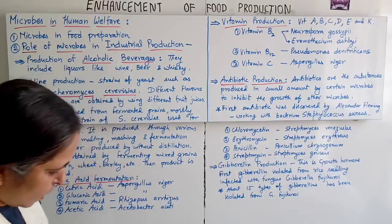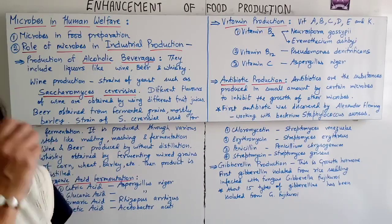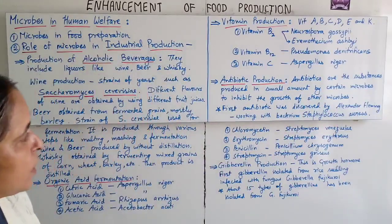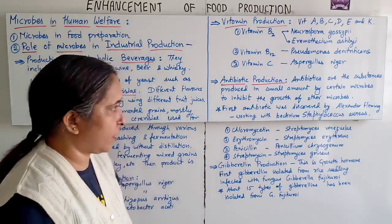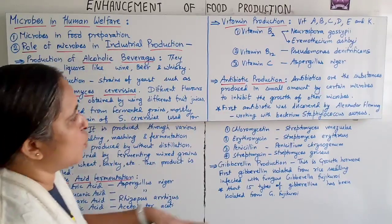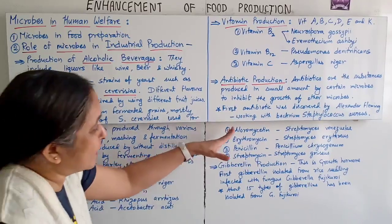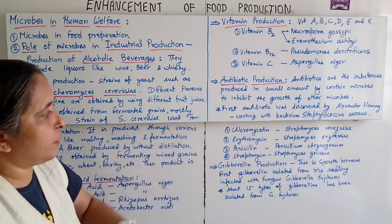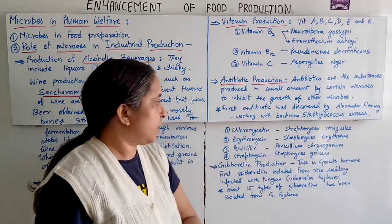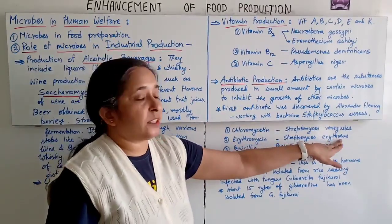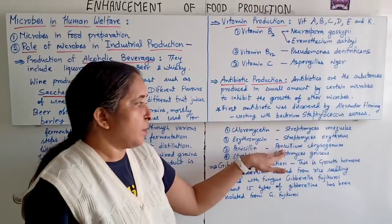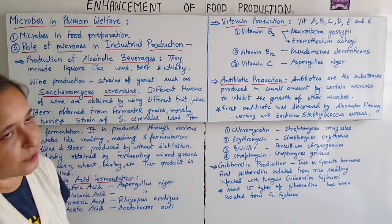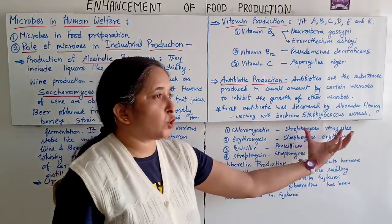Next is antibiotic production. Antibiotics are substances produced in very small amounts by certain microbes to inhibit the growth of other microbes. The first antibiotic was discovered by Alexander Fleming when he was working with the bacterium Staphylococcus aureus. Examples: chloromycetin from Streptomyces venezuelae; erythromycin from Streptomyces erythreus; penicillin from Penicillium chrysogenum; and streptomycin from Streptomyces griseus.